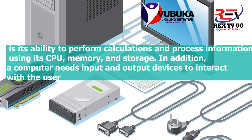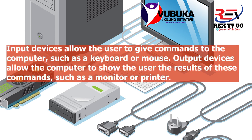The output devices include the monitor, the screen, and the printer. The input devices include the keyboard, the mouse, the scanner, and many other devices we shall be looking at one by one. Output devices allow the computer to show the user results of commands. The input devices feed information into the computer so it can perform arithmetic and logic operations, then output results through the monitor or printer.